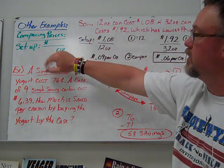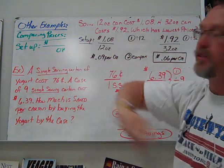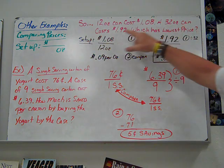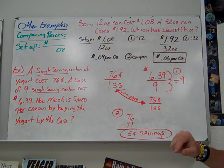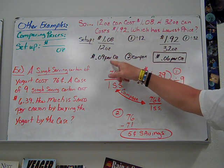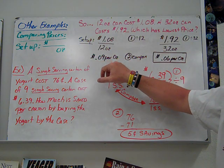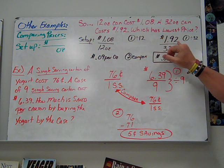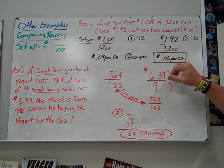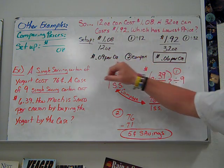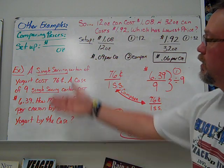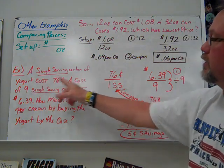If we compare prices, the setup you want to do is always money over the ounces. We have a 12-ounce can costs $1.08. A 32-ounce can costs $1.92. Which has the lowest price? Our setup is 108 over 12 ounces, divide by 12, we find it's 9 cents per ounce. We take $1.92 over 32 ounces, divide by 32, get 6 cents per ounce. The one that's lowest is your answer if they're asking for the best cost.